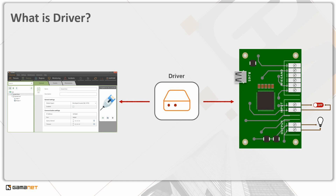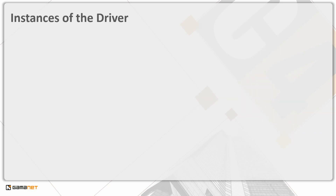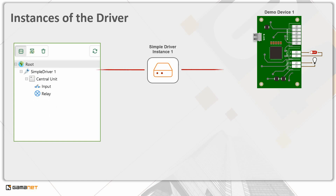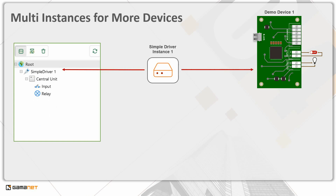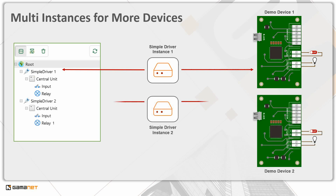A driver communicates with the external system non-stop, from initiation of the communication until its termination. Each instance of the driver always communicates with a set of devices that have one specific network connection point. If there are multiple devices with various connection points, the driver is launched in several instances, for each connection point separately. This means that the C4 system automatically creates and manages as many instances of the driver as there are connection points defined in the device tree.